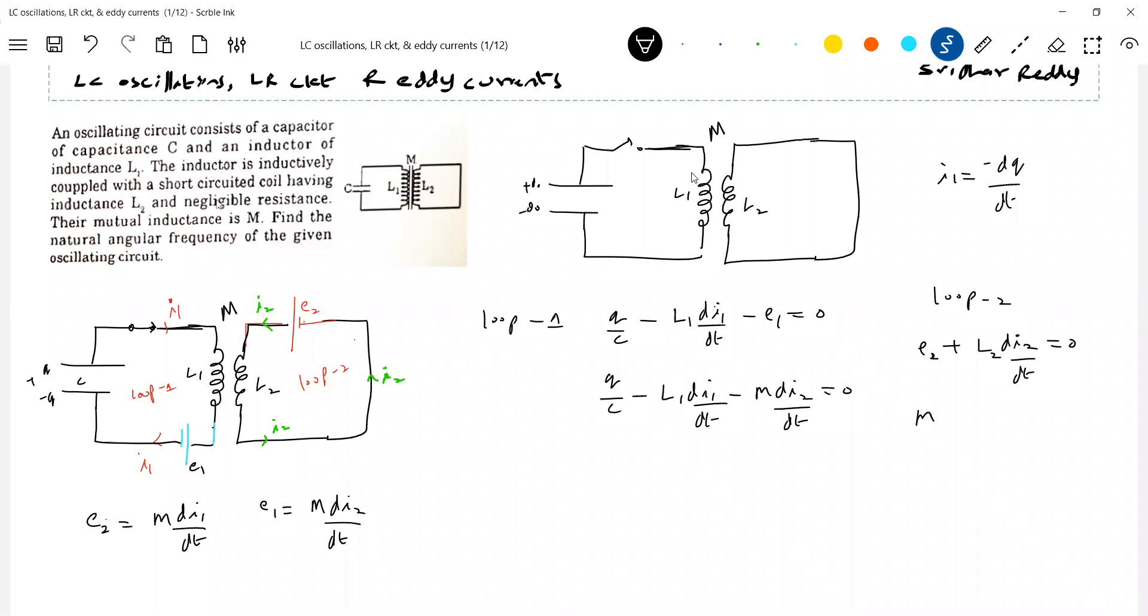What is E2? E2 should be equal to M. Substitute 2 in, so this will be polarity of E1. Listen, listen, in the end we'll talk it. Don't bother. Trust your teacher. Di2 by dt, M by L2, di1 by dt. I'll substitute this value here. Q by C, L1, di1 by dt.